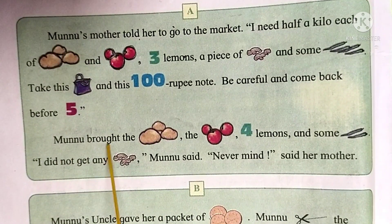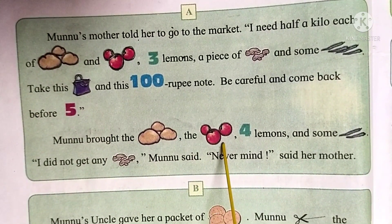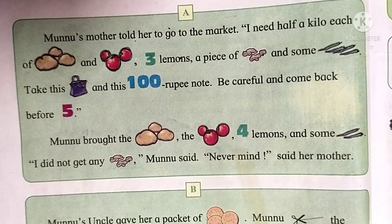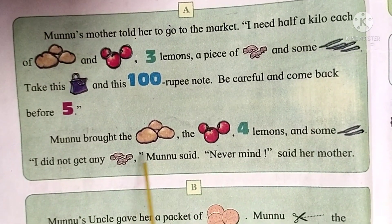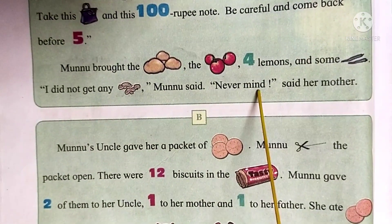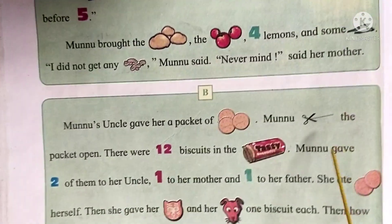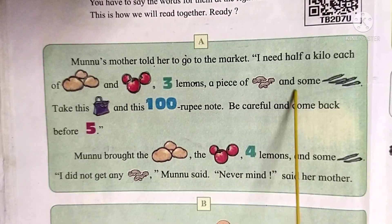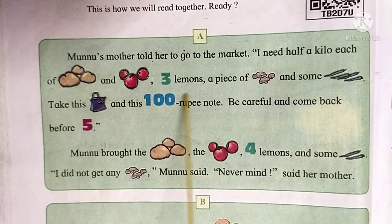Munnu brought the potatoes, the tomatoes, 4 lemons and some chilies. 'I did not get any ginger,' Munnu said. 'Never mind,' said her mother. But here are the pictures and numbers — what are the numbers that you thought about?